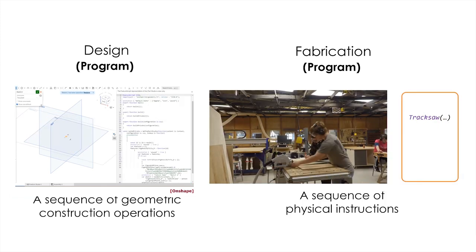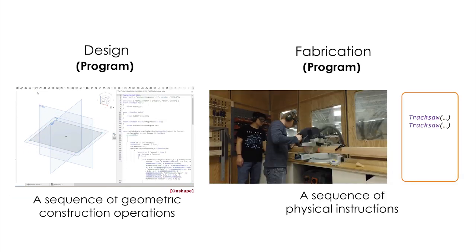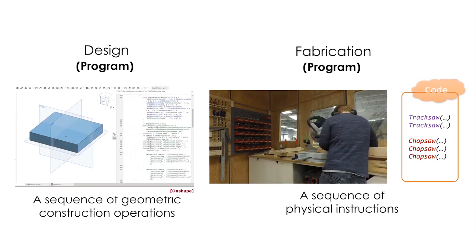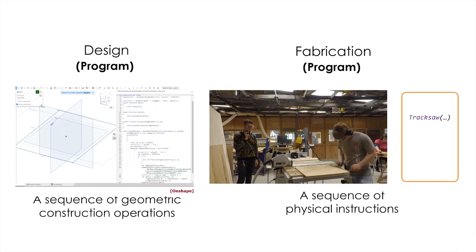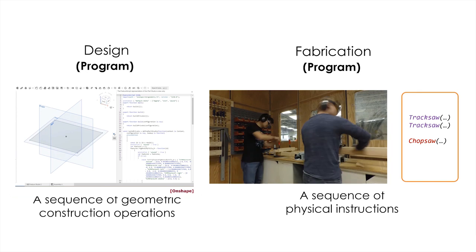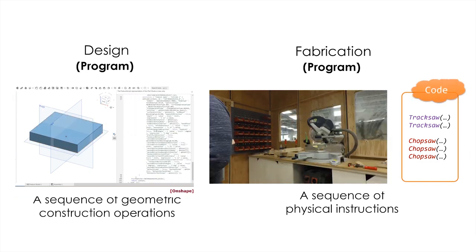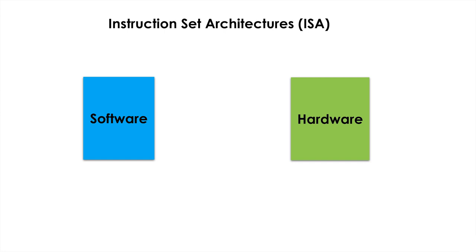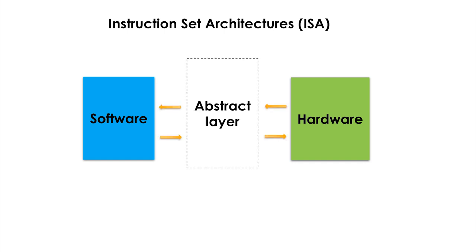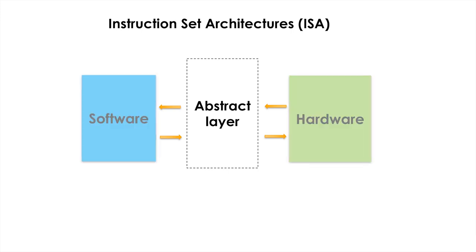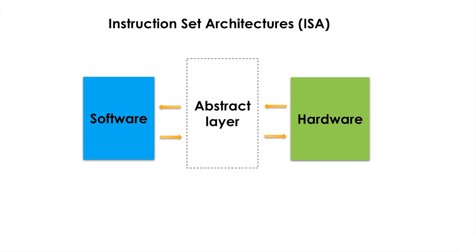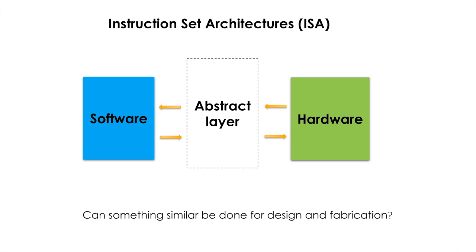A design can be expressed as a sequence of geometric construction operations, and a fabrication plan is a sequence of physical instructions. This can help us solve problems in design for fabrication by drawing ideas from computer systems. One of the most influential developments in computer architecture was the introduction of ISAs, which serve as an interface between hardware and software and enabled independent development of both sides. In this work, we ask if something similar can be done for design and fabrication.